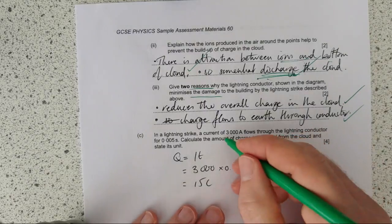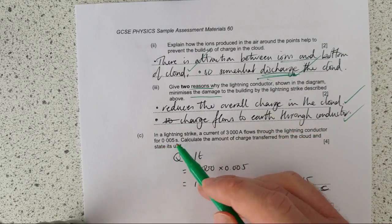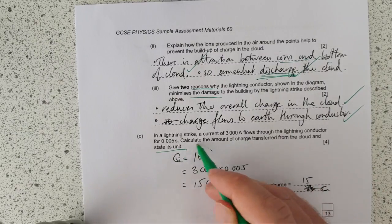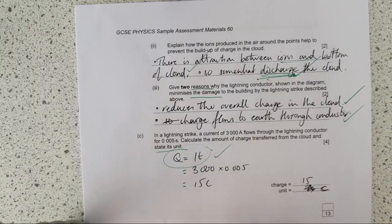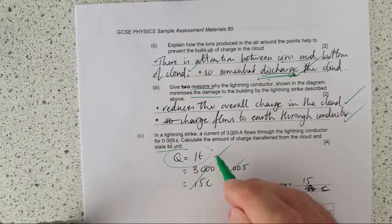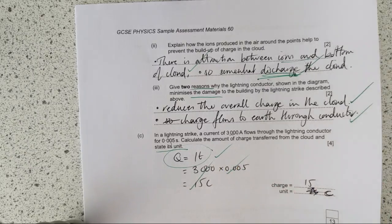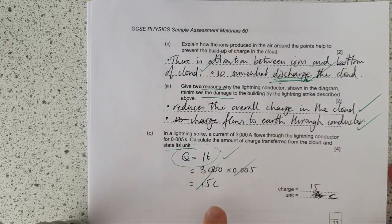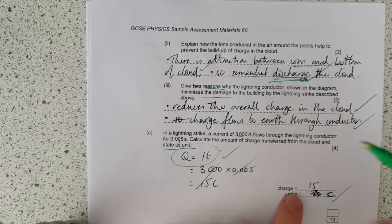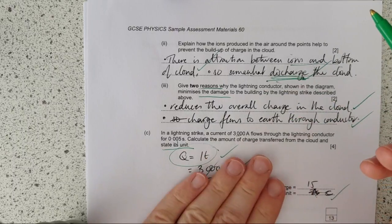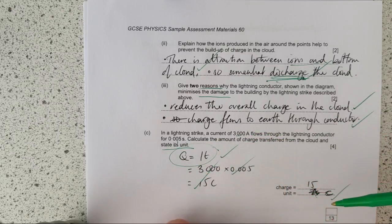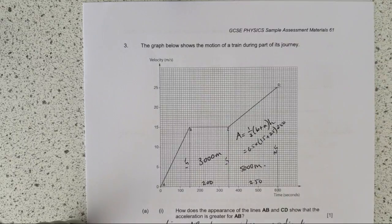The lightning strike - the current of 3000 amps flows through the lightning conductor for 0.005 seconds, calculate the amount of charge transferred and state its unit. So you've gone ahead and recalled the equation - mark. You've checked the units are coherent, amps and seconds, and you've plugged them in - mark. 15 for the charge - mark. And the unit, coulombs - mark. And I almost made the mistake of writing amps because I didn't think about it. You can probably get two marks without doing any thinking on this, you've just recalled your equation and you've recalled the charge is measured in coulombs.